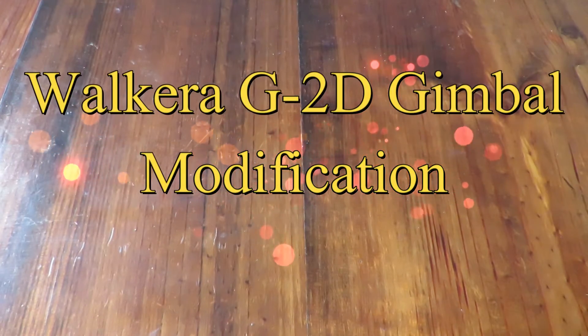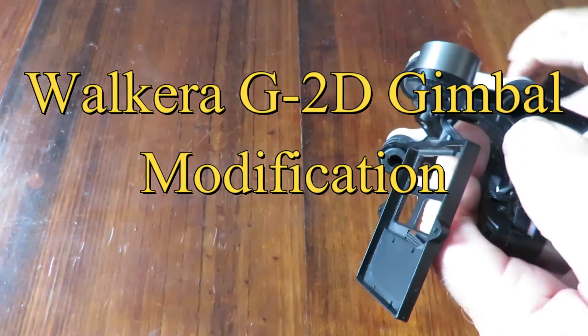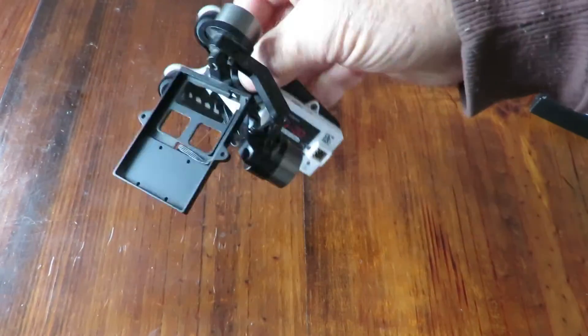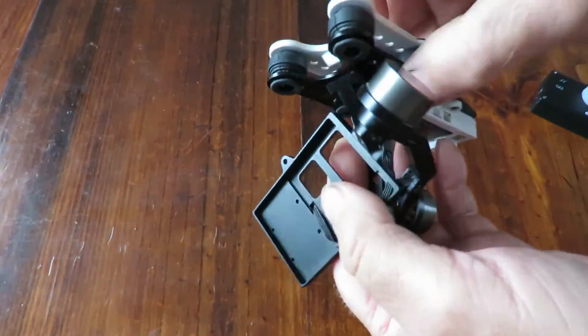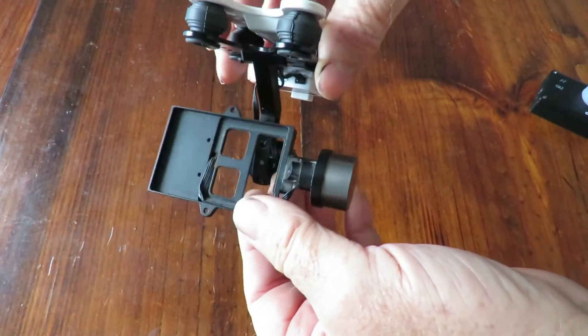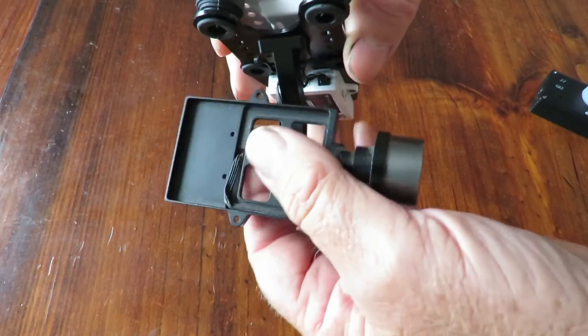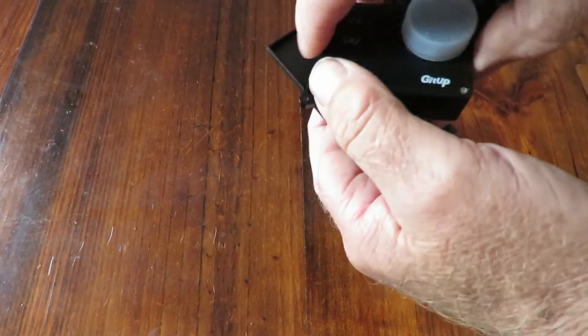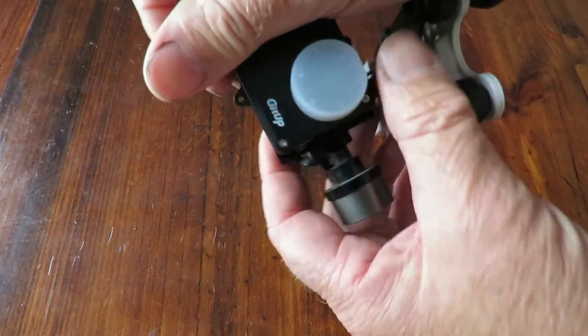Good day, today I'm going to have a look at the old Walkera 2G gimbal that I've had for quite a while. I did a video a long time ago on balancing an SJ4000 camera on it. I've got the GIT2 now as my replacement camera and it fits in here quite nicely.